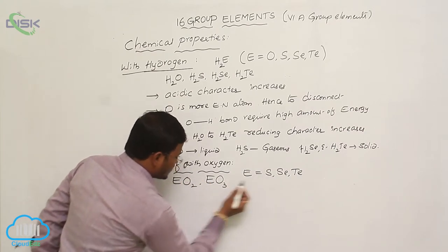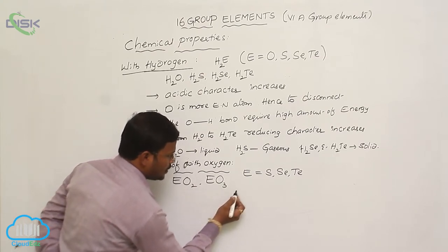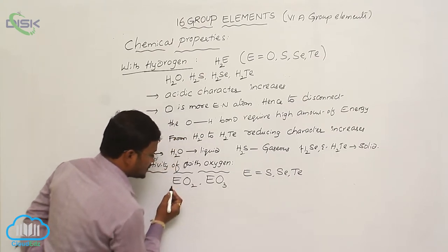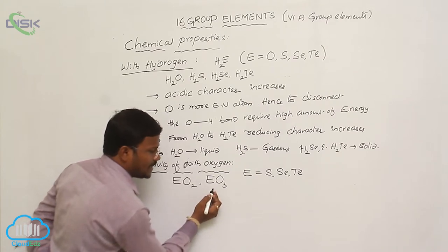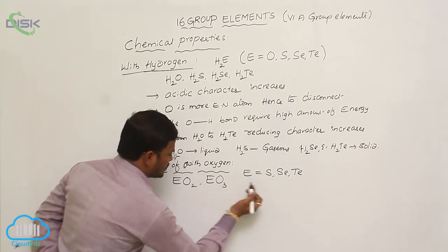If it is sulfur, then SO2, SO3—sulfur dioxide and sulfur trioxide. If it is SeO2, selenium dioxide and selenium trioxide. If it is tellurium, tellurium dioxide and tellurium trioxide.